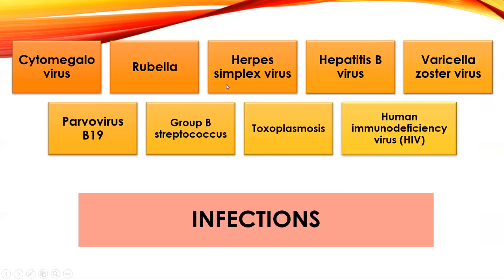Herpes simplex virus can affect the genital regions. If a mom is infected with herpes, she must be careful about vaginal delivery and is typically placed on suppressive therapy for genital herpes. If a baby is born through the vagina with an active herpes infection, that infection can get into the baby's brain causing herpes encephalitis, and they don't fare well. Hepatitis B — if she's actively infected, there's a high chance the baby will seroconvert and be infected as well.